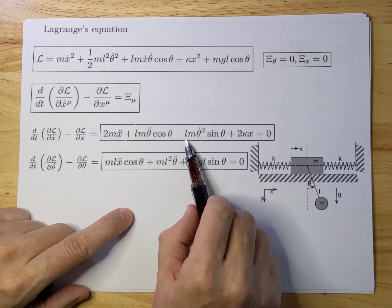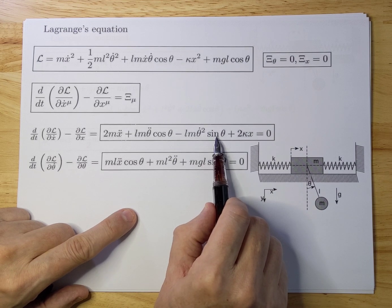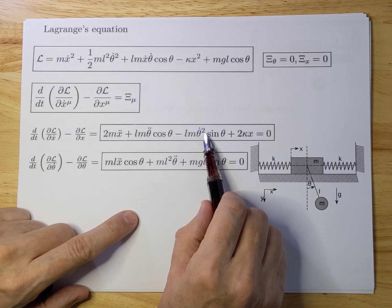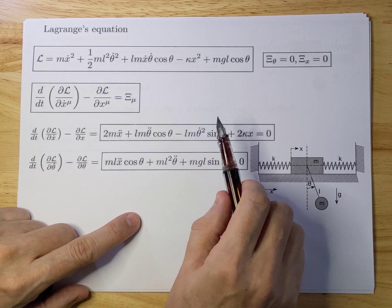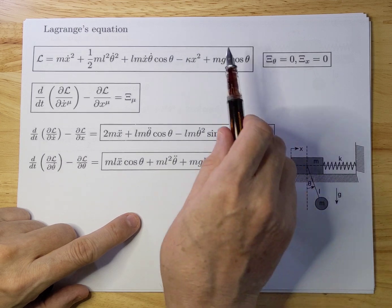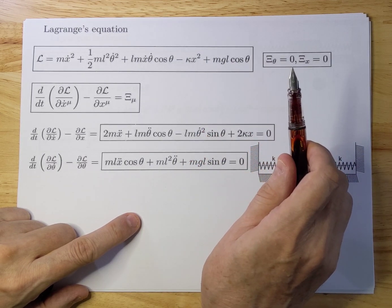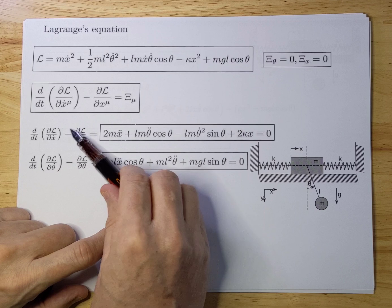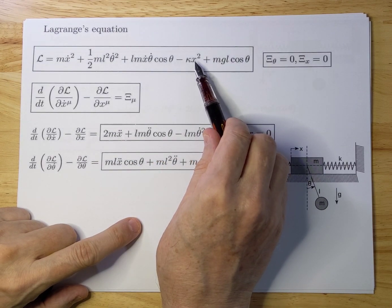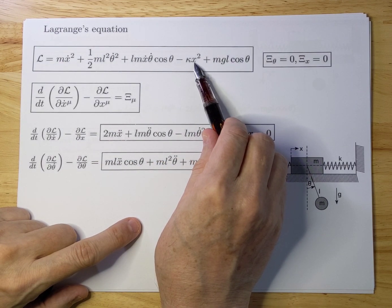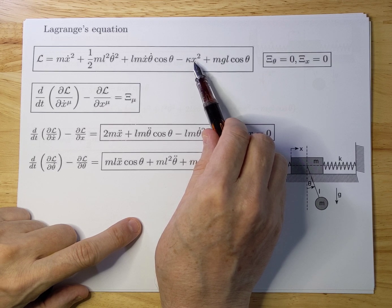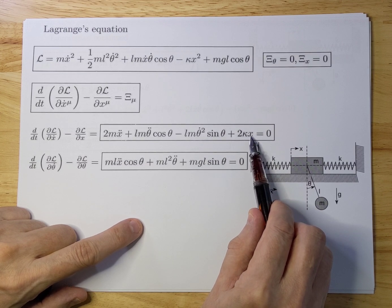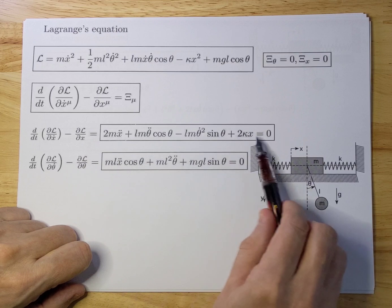That also yields a term with minus theta-dot squared sine theta. Then we differentiate the Lagrangian with respect to x, and what you see is that you get another term which is 2k x. So that's the first equation of motion with respect to x.